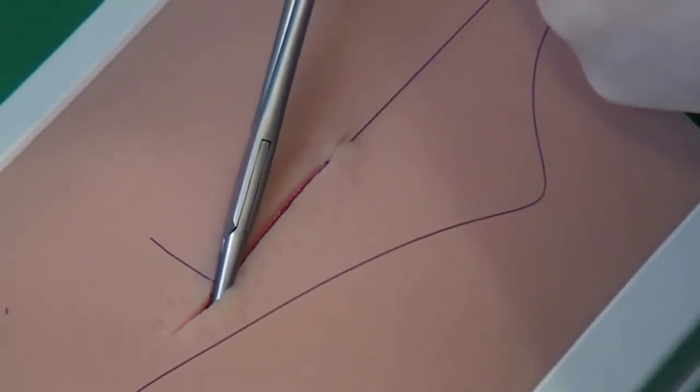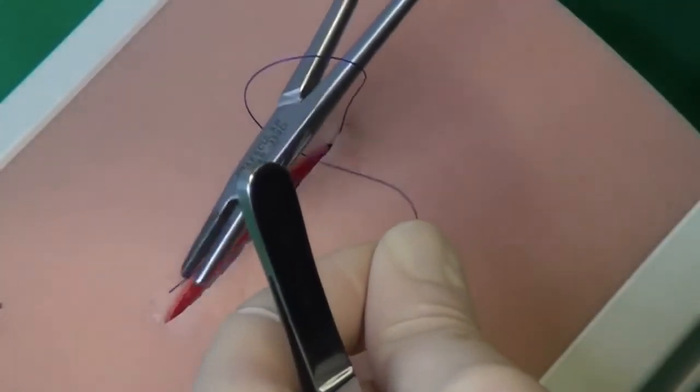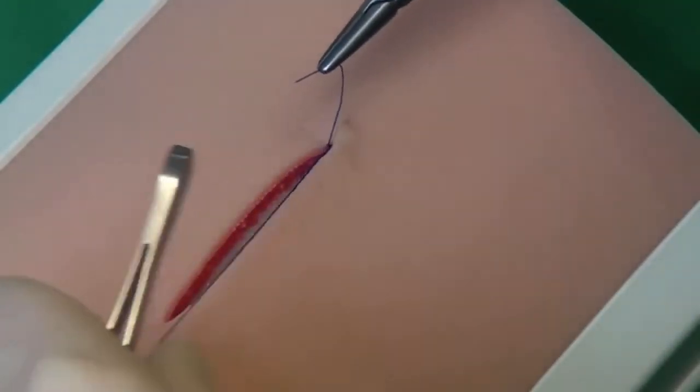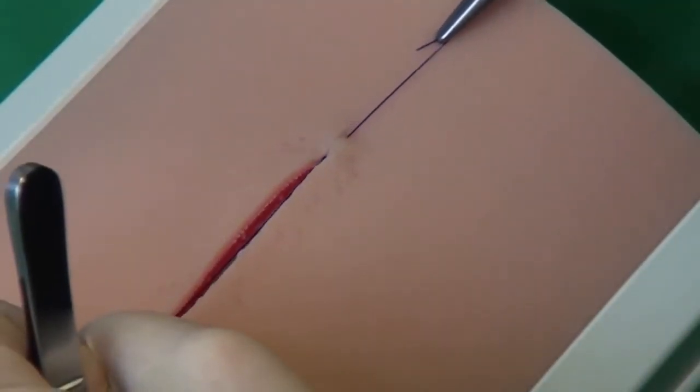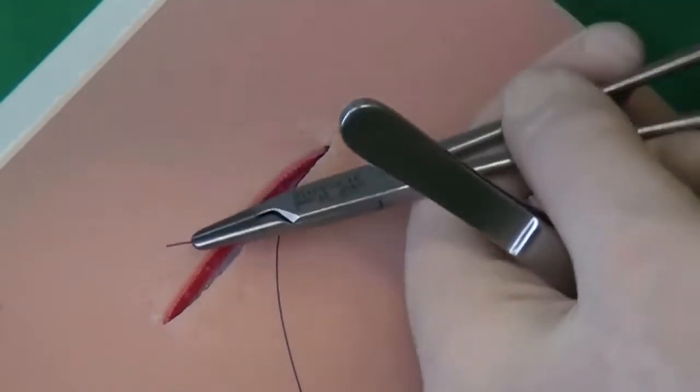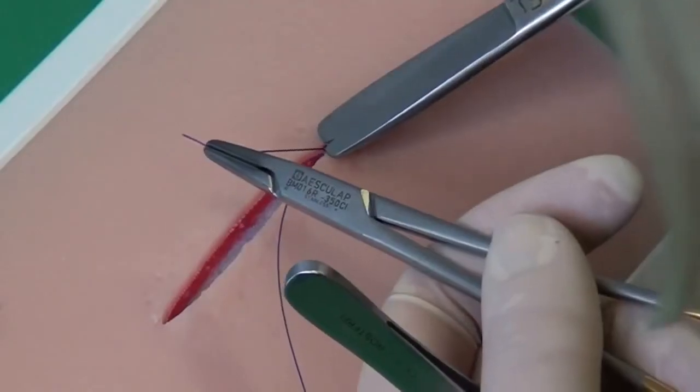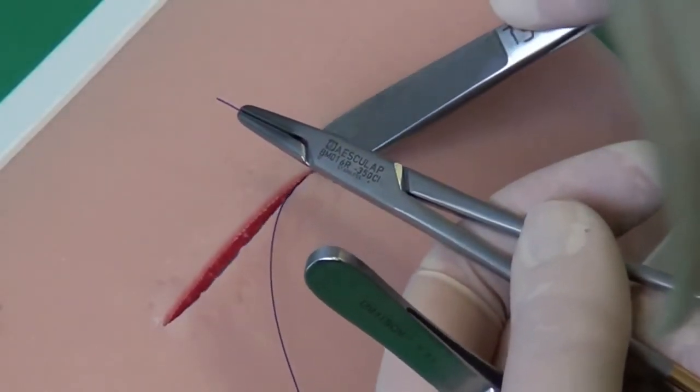Right-handers suture from right to left, with the needle holder in the right hand and the left hand holding the forceps. The end of the thread is cut short so that it stays inside the skin.